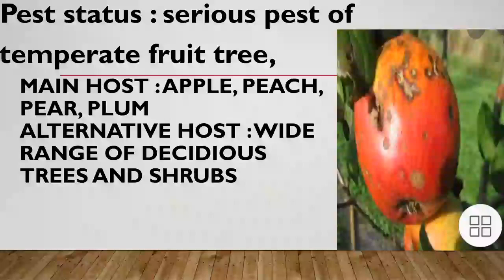Quadraspidiotus perniciosus is a serious pest of temperate fruit trees, mainly in the hill orchards of the Himalayan tracts. Fruit trees are seriously affected and the fruit is rendered commercially useless. Its main hosts are apple, peach, pear, and plum, and the alternative hosts are a wide range of deciduous trees and shrubs.